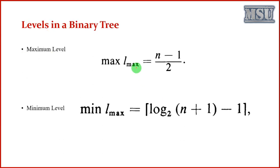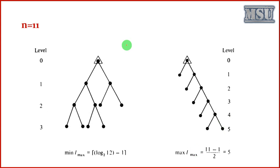Then binary tree can be represented in different levels. By using the formula, we can identify maximum level needed and minimum level needed. Maximum level needed to construct a binary tree for n vertices is n minus 1 by 2. The minimum level needed is: it is actually a ceiling function of log 2 of n plus 1 minus 1. Now we consider an example: n equal to 11.